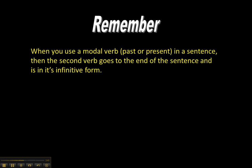Remember, when you use a modal verb in the present tense in a sentence, the second verb goes to the end of the sentence and stays in its original infinitive form. So for example, I can learn German — you're going to say ich kann Deutsch lernen. Kann pushes the verb lernen to the end and lernen is in its infinitive form.